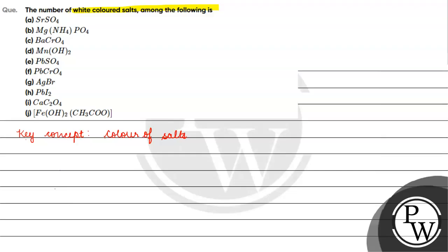If we talk about strontium sulfate, SrSO4, we have white color. Okay, next if we talk about this salt also, what we have?